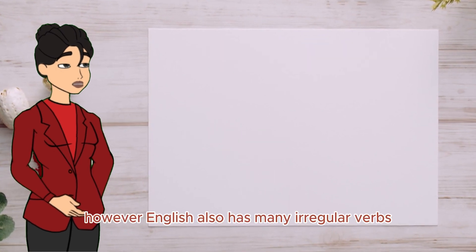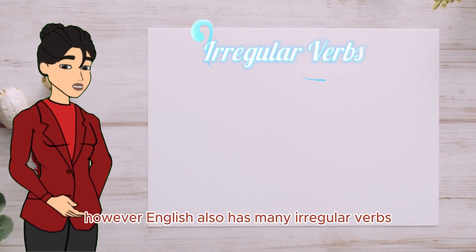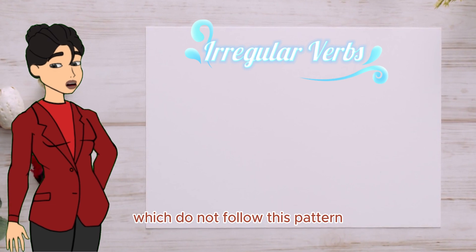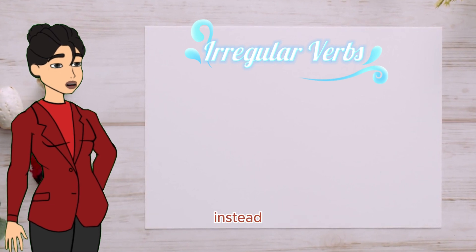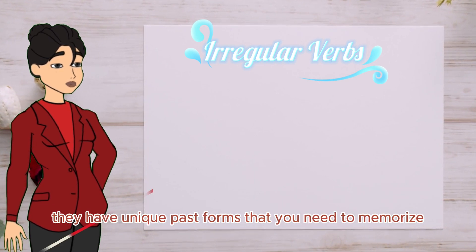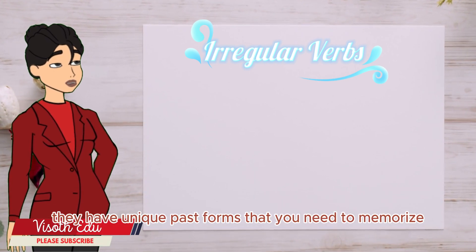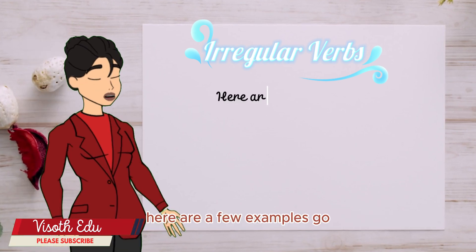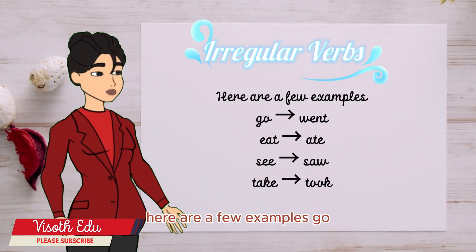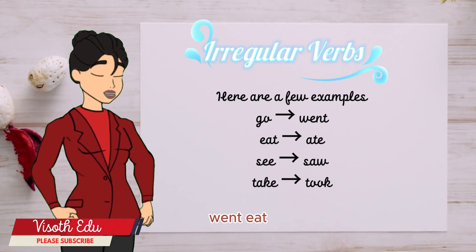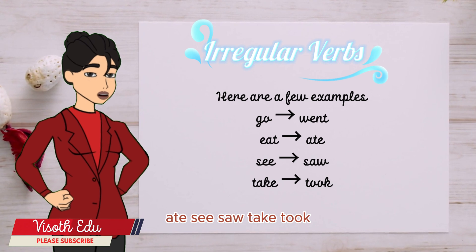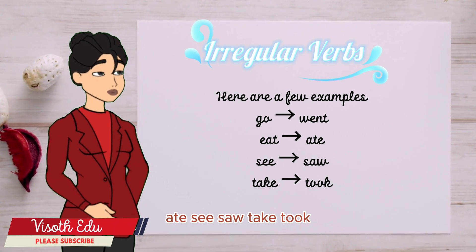However, English also has many irregular verbs which do not follow this pattern. Instead, they have unique past forms that you need to memorize. Here are a few examples: go → went, eat → ate, see → saw, take → took.